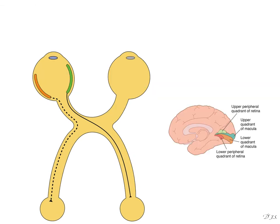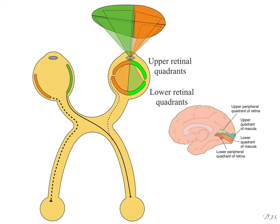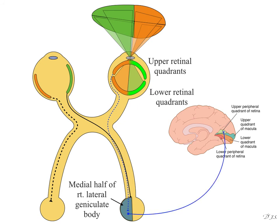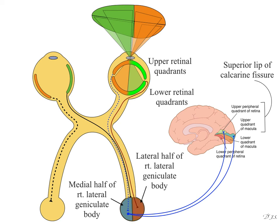The upper and lower retinal quadrants look at the right lower visual field and right upper visual field respectively. Sensations from the upper retinal quadrants project to the medial half of the right lateral geniculate body, and from there to the upper peripheral quadrant of the retina and upper quadrant of the macula at the superior lip of the calcarine fissure. Sensations from the lower retinal quadrants go to the lateral half of the right lateral geniculate body, and from there to the inferior lip of the calcarine fissure.